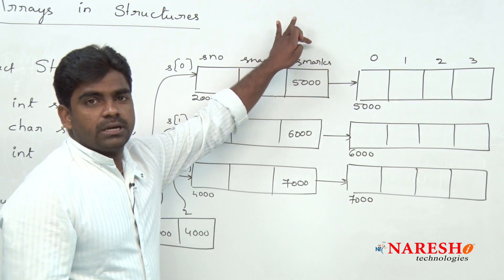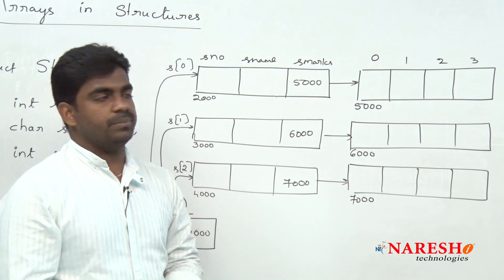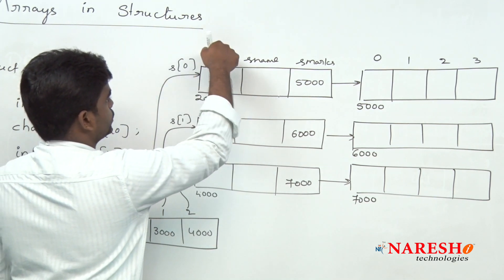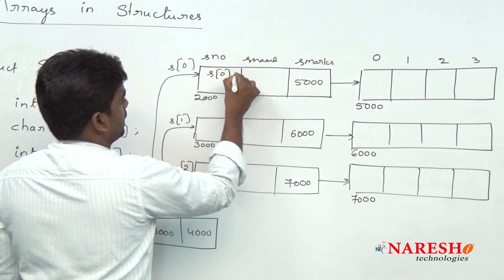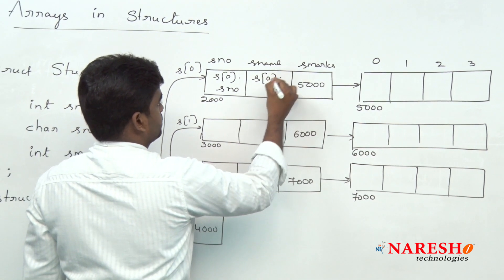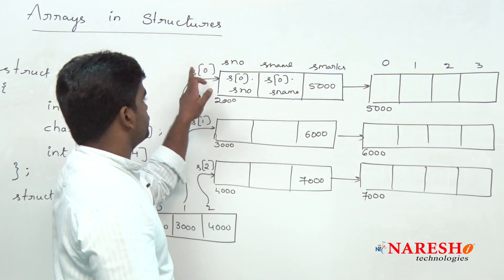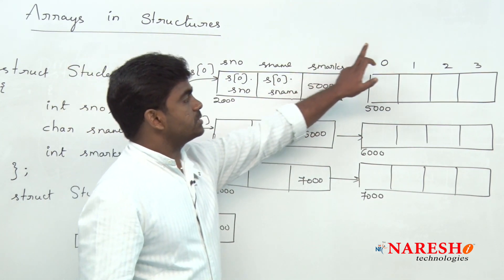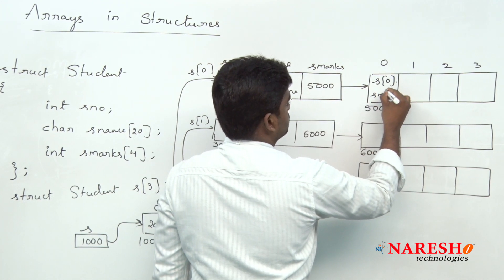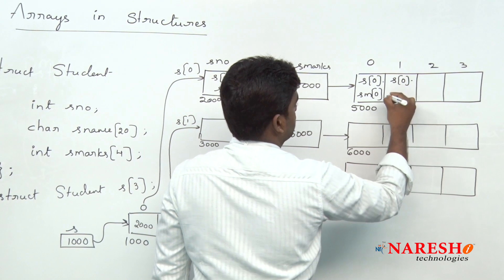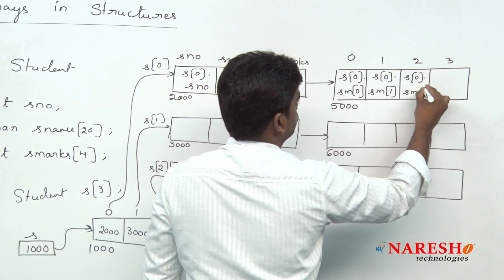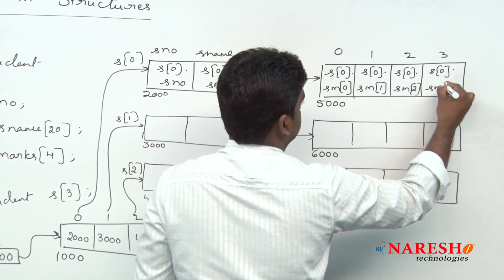The marks is an array variable and we know that an array variable always holds a base address only. So if you want to read the first record, here we have s[0].s_number, s[0].s_name, and then s[0].s_marks[0], s[0].s_marks[1], s[0].s_marks[2], s[0].s_marks[3] like this.